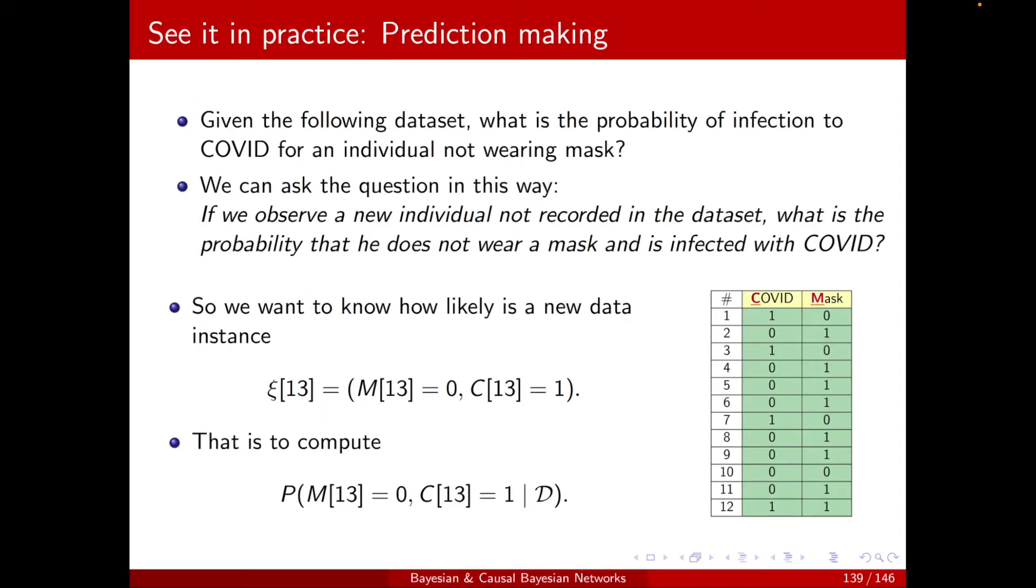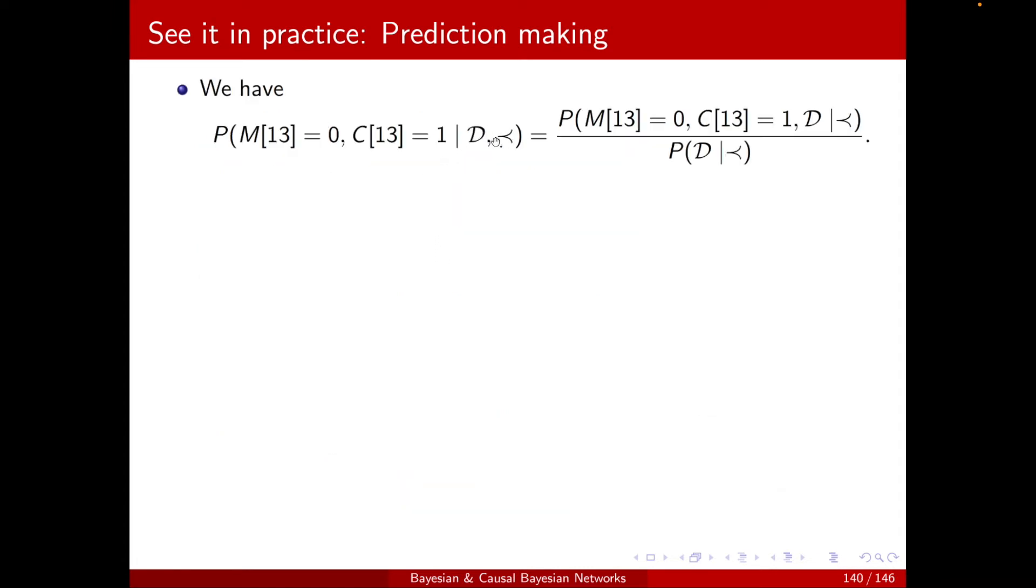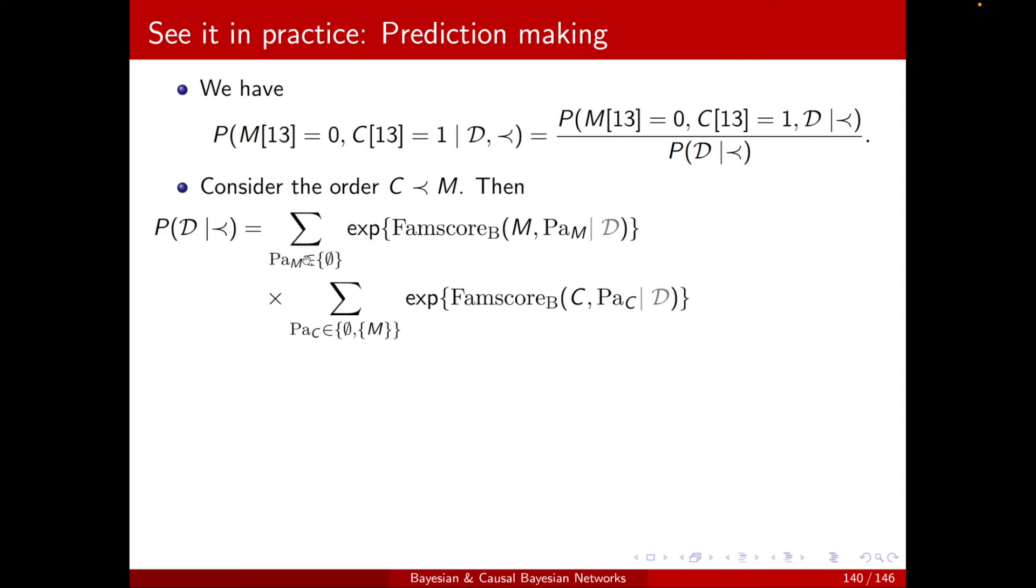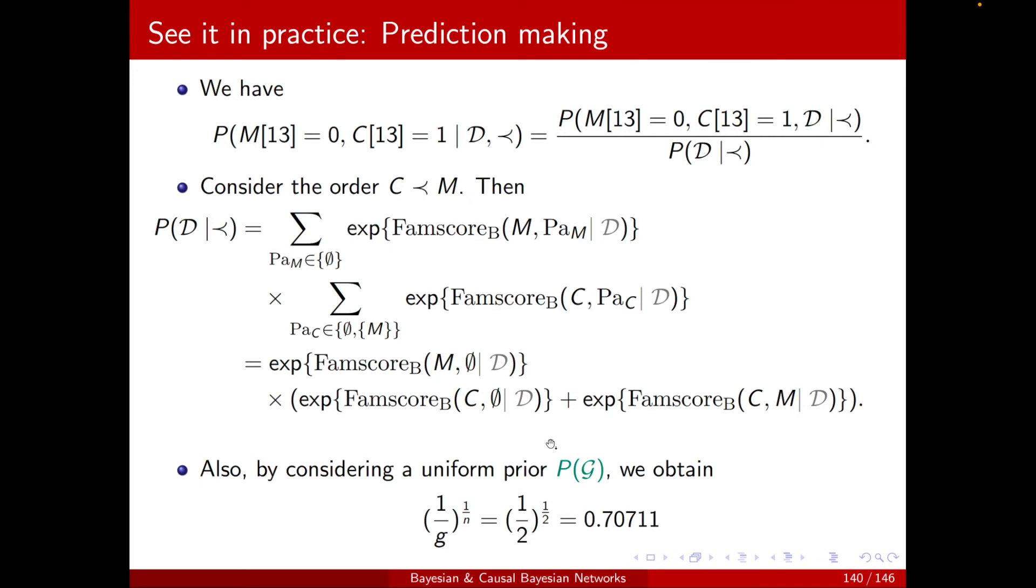Let's see it in practice. I want to calculate the probability of this new instance, given this dataset D. I'm putting the order here. As we said, it doesn't matter really as long as you're consistent. This is just to emphasize that it's based on the ordering. So I need an order. The one I'm considering here is C less than M, meaning that M does not take any parent, but C can take either no parent or M. So P(D), using the formula we saw, is this term: the exponentials of the possibilities of M, which is no parent, times the cases for C, which is either no parent or M as the parent. M no parent, C can have two cases.